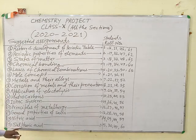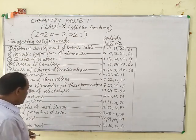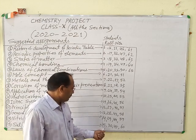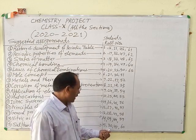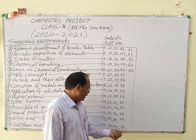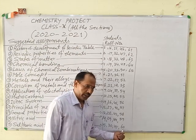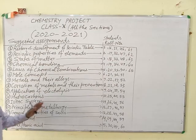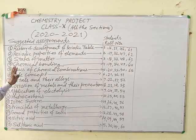Sulfuric acid for roll numbers 15, 30, 13, 45 and 60. Now, how to make the project file.